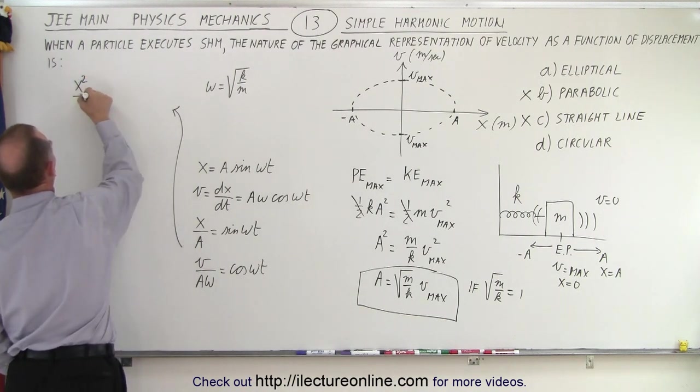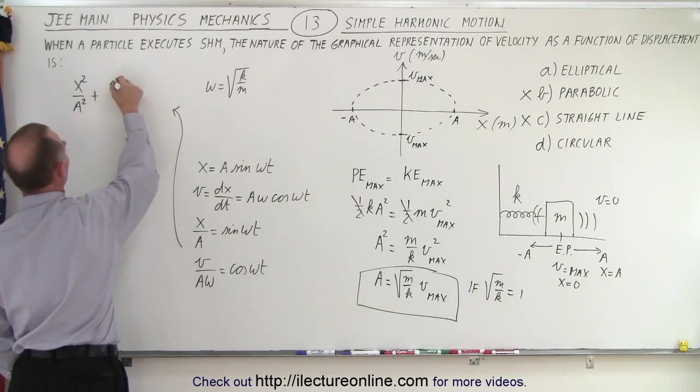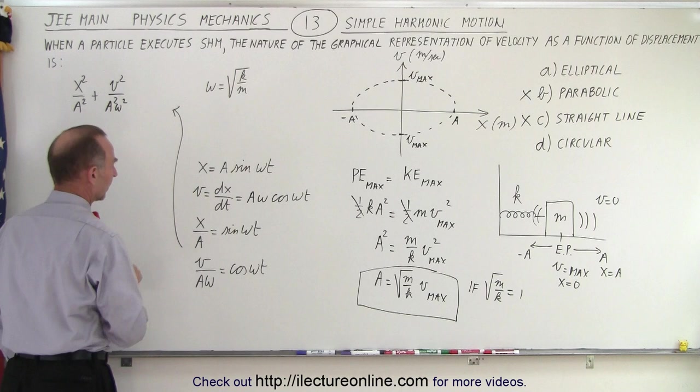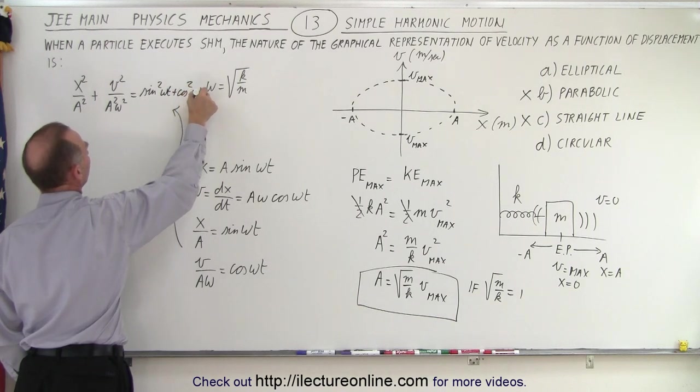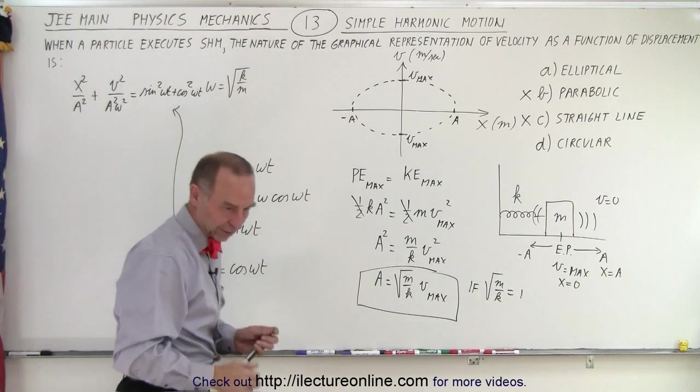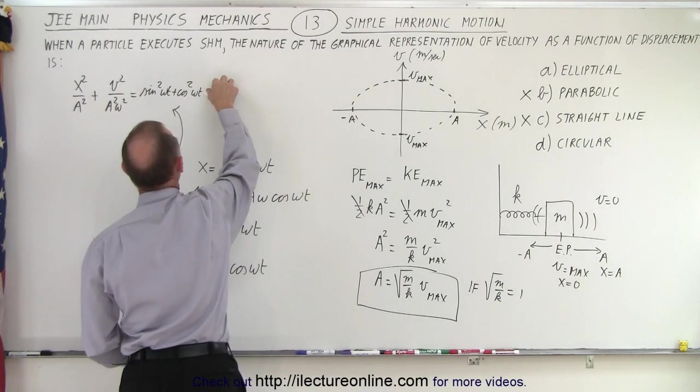I can then say that x squared over a squared plus v squared over a squared omega squared is equal to the sine squared of omega t plus the cosine squared of omega t. And notice that I'm definitely running out of room, so let me get rid of this here and write that somewhere else.